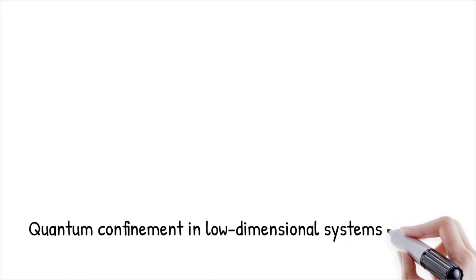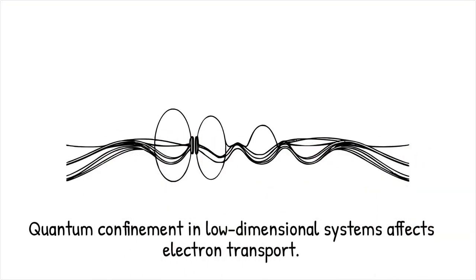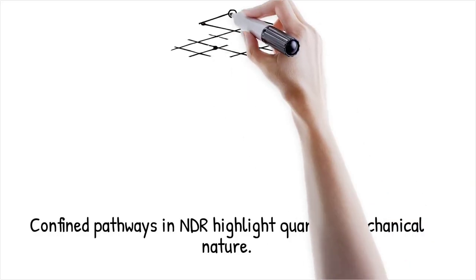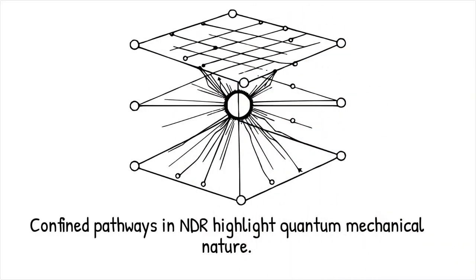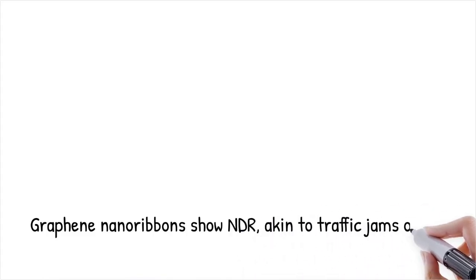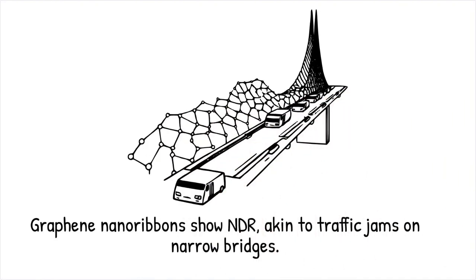In low-dimensional systems such as quantum wires or graphene nanoribbons, quantum confinement leads to discrete energy states that critically influence electron transport. As voltage changes, these systems may transition between conductive and non-conductive states, producing a peak current followed by a decline characteristic of NDR. The confined pathways restrict electron flow in a manner that deviates from classical behavior, highlighting the quantum mechanical nature of these materials. Research experiments with graphene nanoribbons have demonstrated that as the bias voltage is varied, the current exhibits a maximum before decreasing, confirming the presence of NDR — similar to traffic on a narrow bridge, where a small change in vehicle numbers can suddenly cause a traffic jam, reducing overall flow.